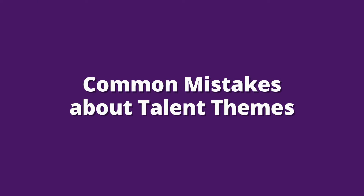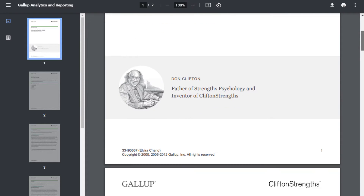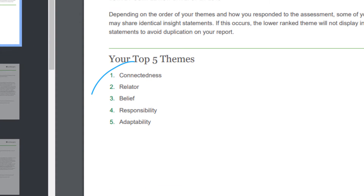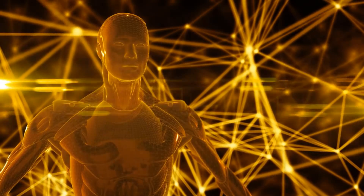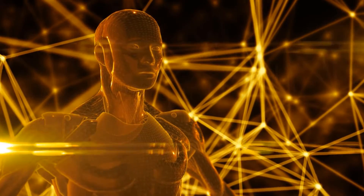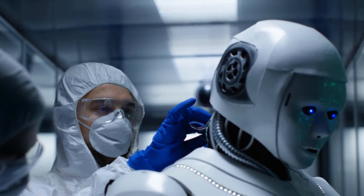A common mistake about talent themes: people get their CliftonStrengths reports, whether it's their top five or the full 34, and they see each of their talent themes as these independent silos. They think that if you have two people with the same talent theme — let's say adaptability — it will look the same in both of those people, almost as if they were interchangeable. But that's not how it works. People mistake talent themes for computer programs, almost as if their talent themes can predict human behavior. But people aren't robots.